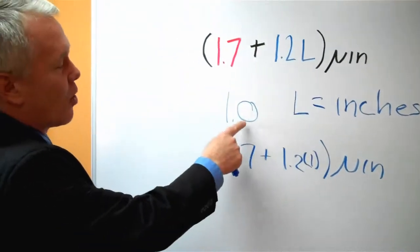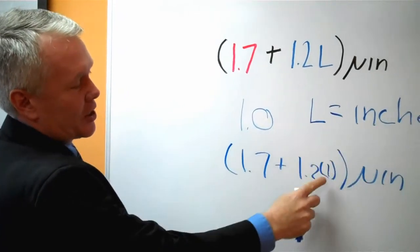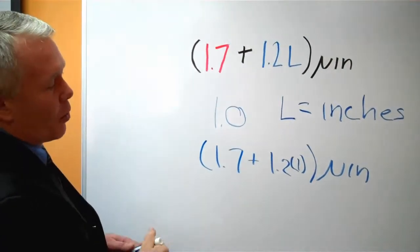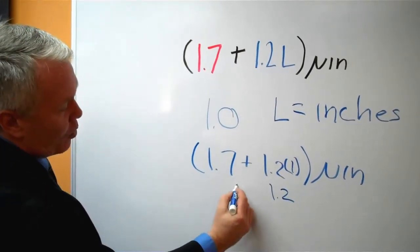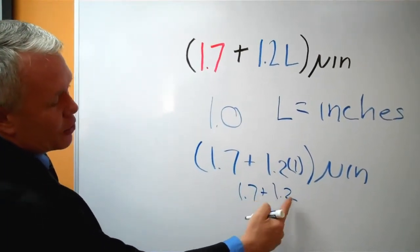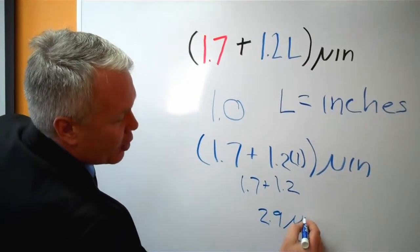Since our gauge block size is one inch, we plug the one inch in for the L, L being in inches. Multiply one times 1.2, which is simply 1.2. Add 1.7. The two of those numbers together, 2.9. And the unit is in micro inches.